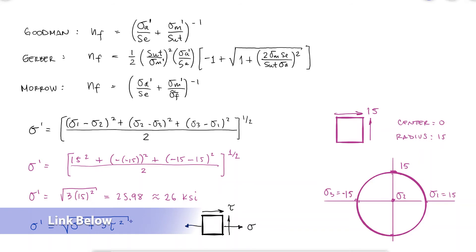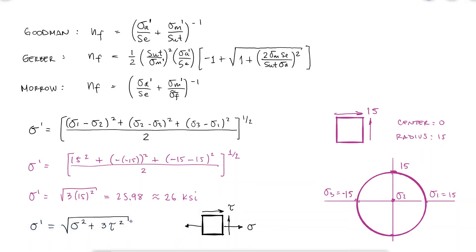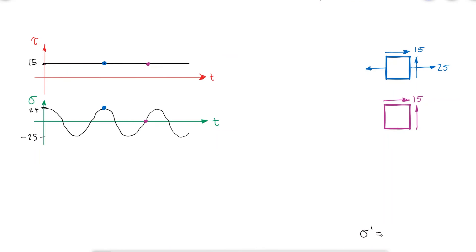So, going back to our current stress state, the minimum von Mises stress will occur when the alternating normal stress is zero, and the maximum von Mises stress will occur when the normal stress is either maximum or minimum at 25 or minus 25.